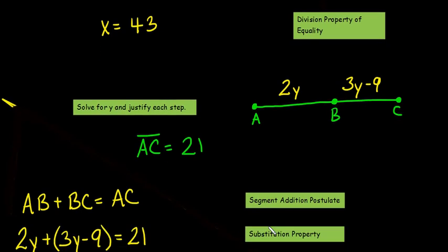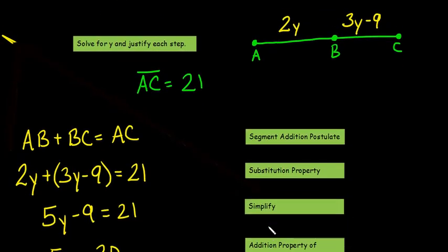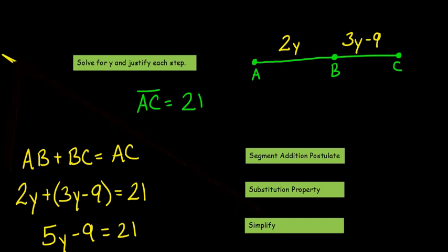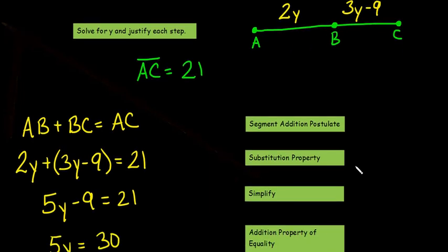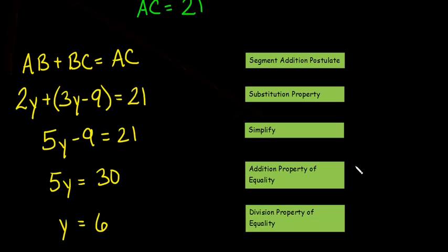Right, here's another example. Sorry for my little boo-boo up here. I can erase it right off the magic. So, we're going to solve for y here on this and justify each step. We've got a segment that equals, it's called AC. It equals 21. AB is equal to 2y, and BC is equal to 3y minus 9. Now, none of this is anything we haven't done yet, except for proving how we're doing it. We're justifying it using our postulates or properties, telling each step and exactly what you use to complete that step.